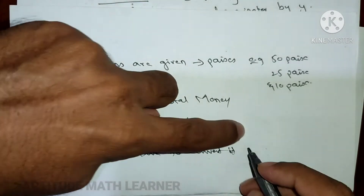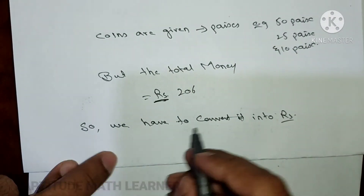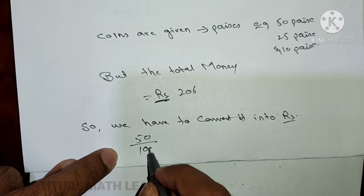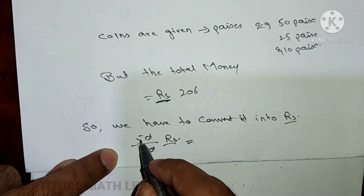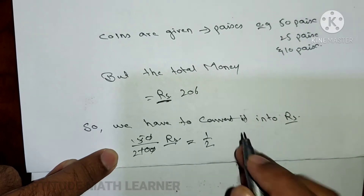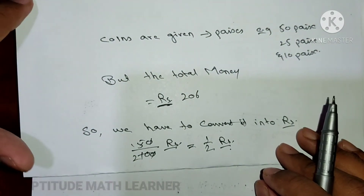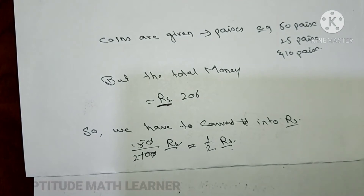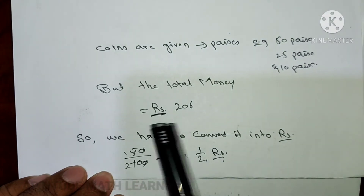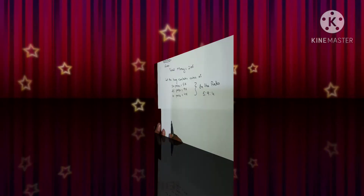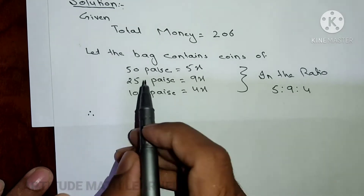So we have to convert paisa into rupees. To convert: 50 paisa divided by 100 gives rupees. That becomes 1/2, so 50 paisa equals half a rupee. Coins are in paisa but total money is in rupees, so we must convert.